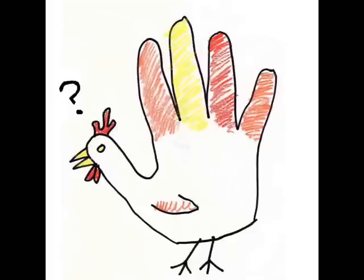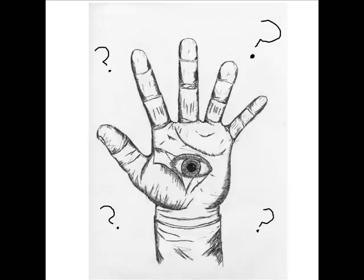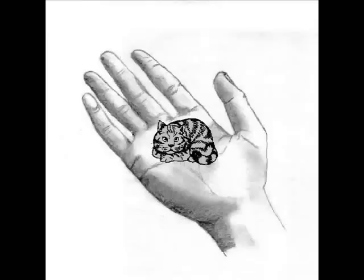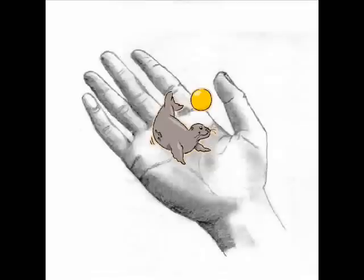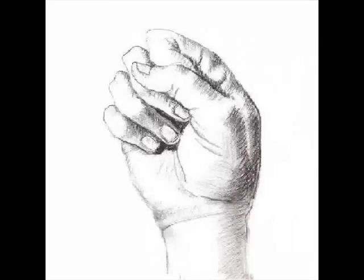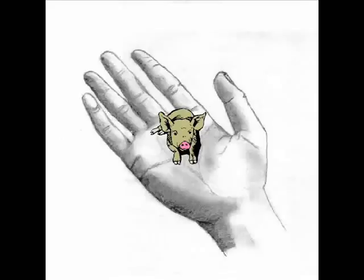What do you have? What do you have there in your hand? I have a meow meow in my hand. I have a o o in my hand.